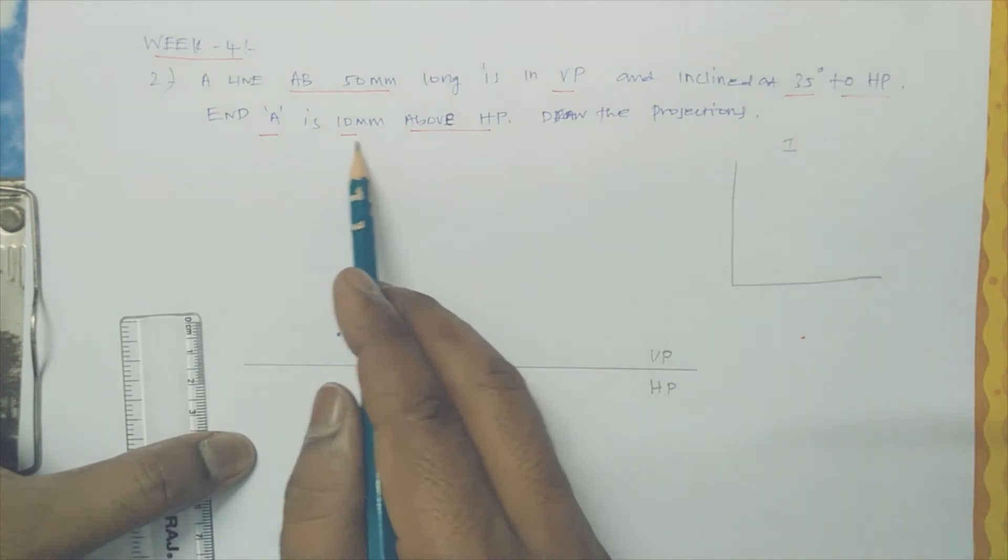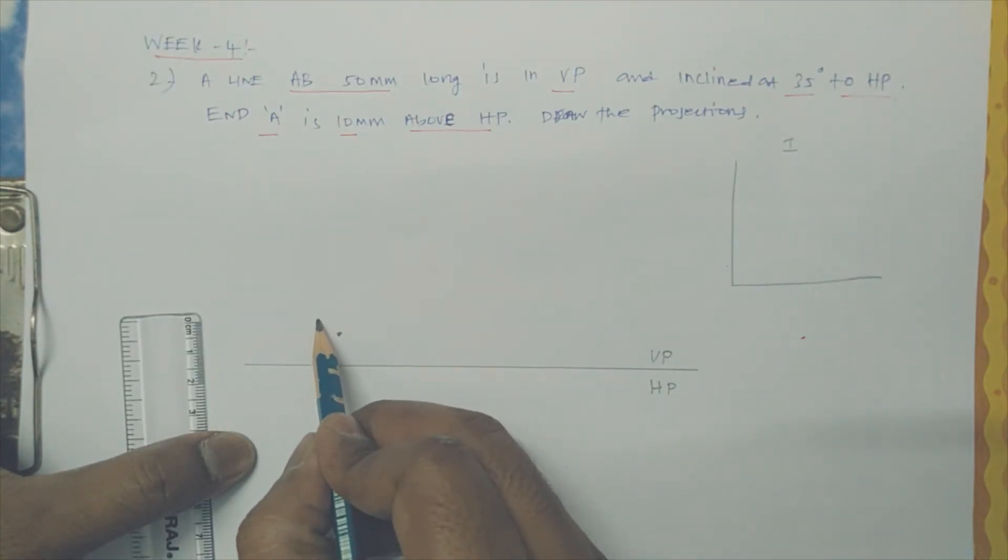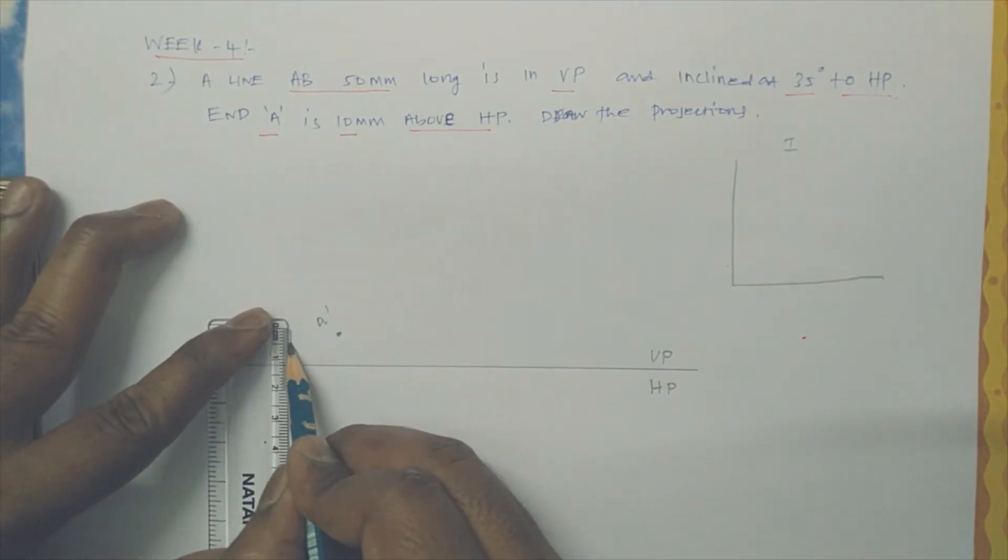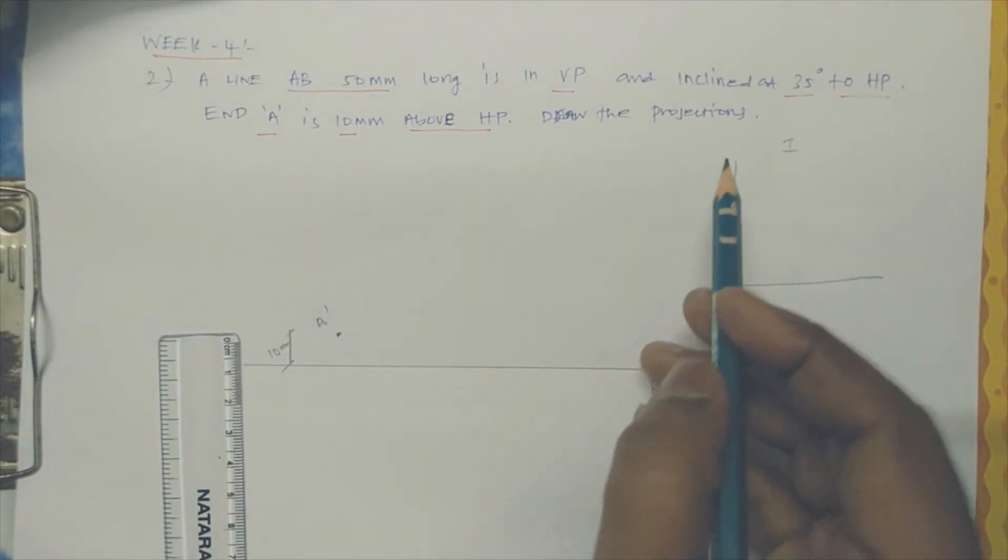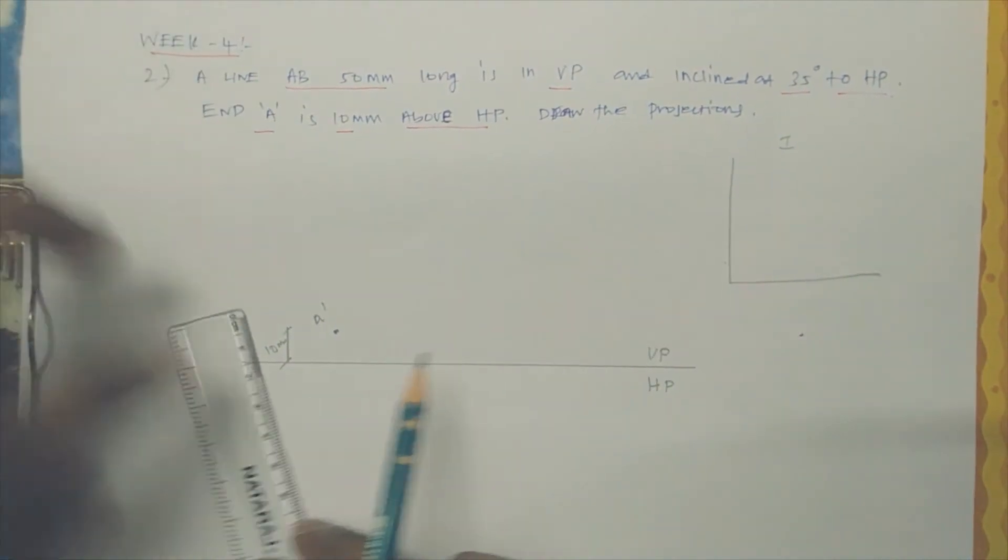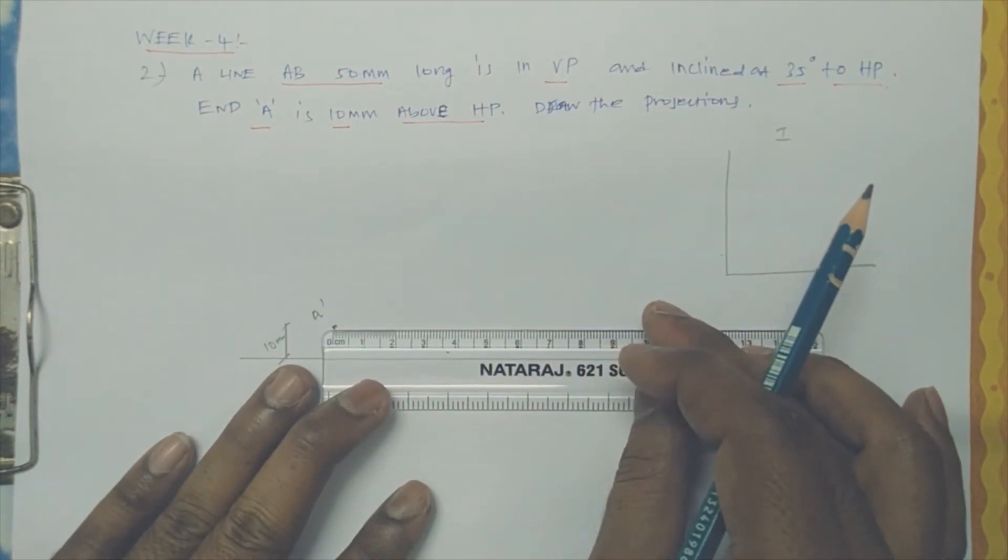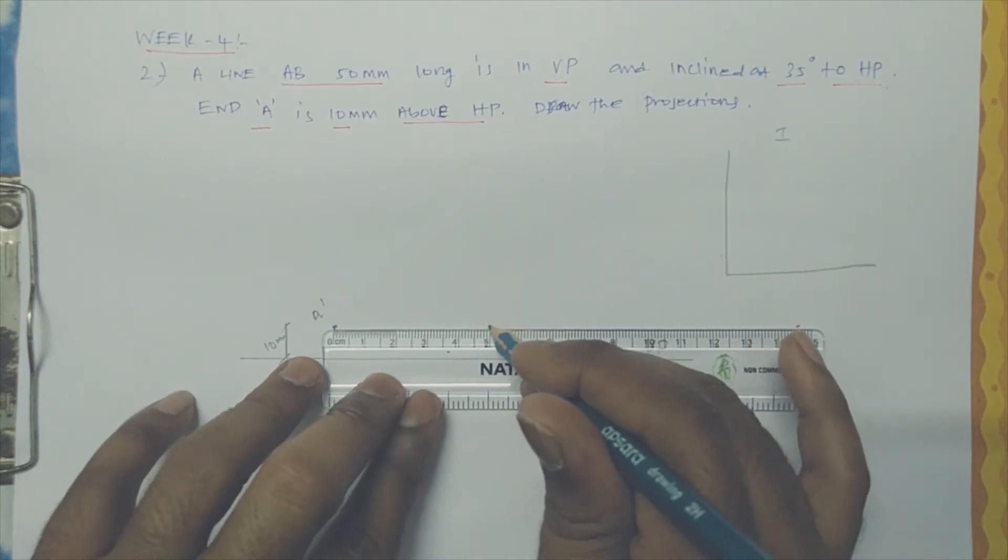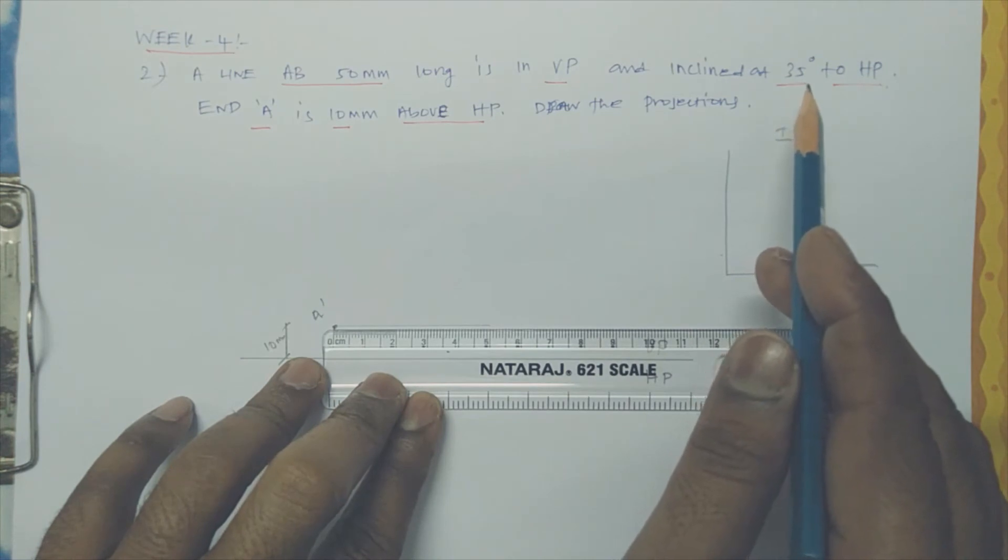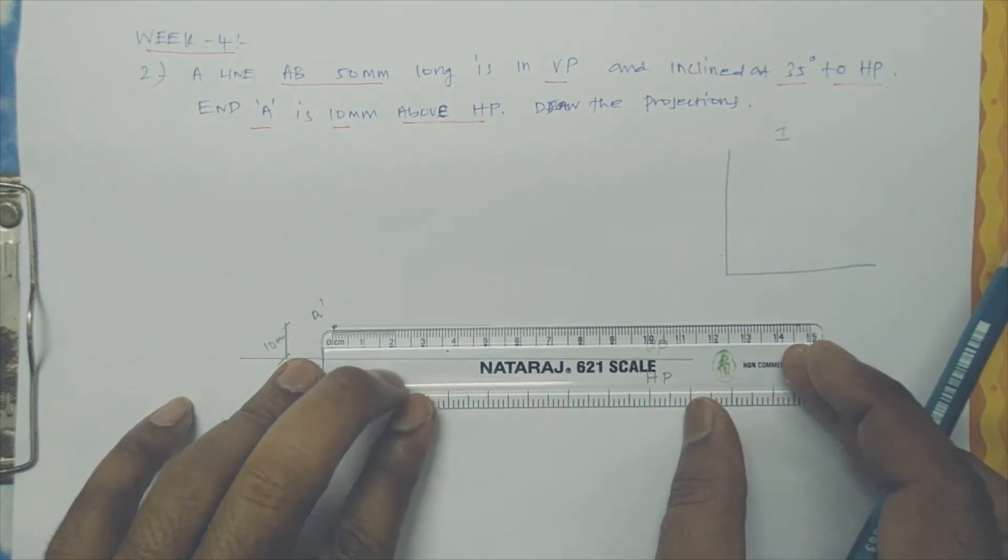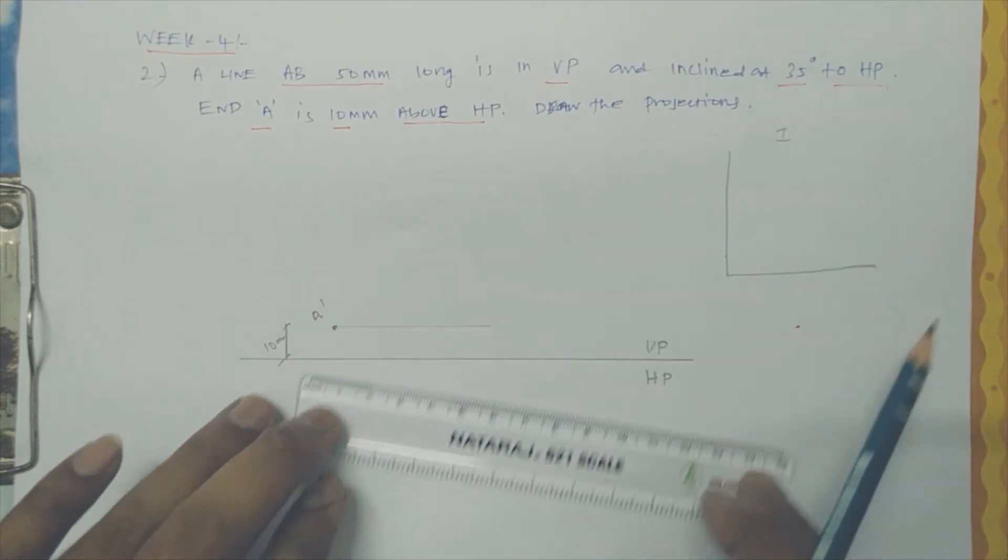End A is 10mm above HP, so obviously it is in the VP. Let us make a dash. The dimension is 10mm. Another point - the line is 50mm long. But this is not the original line, it is for reference I am dropping. And the same line is inclined 35 degrees to HP, so one point is here. Let us make 35 degrees to HP.